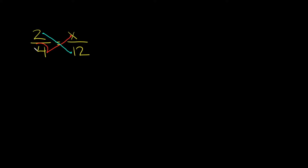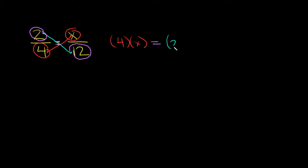So I'm going to multiply 4 and x together: 4 times x. Then we set that equal to our other cross — the blue cross — which is 2 times 12. Now we just have to simplify. 4 times x is just 4x, and that's equal to 2 times 12, which is 24.